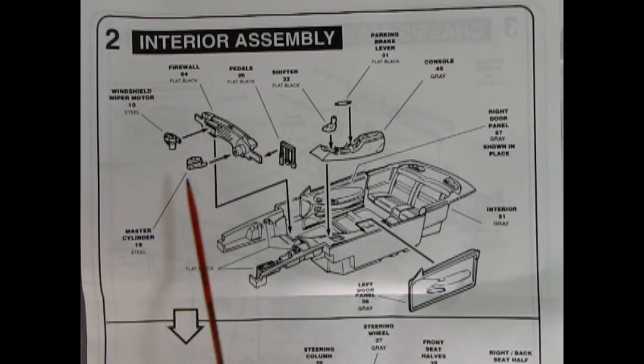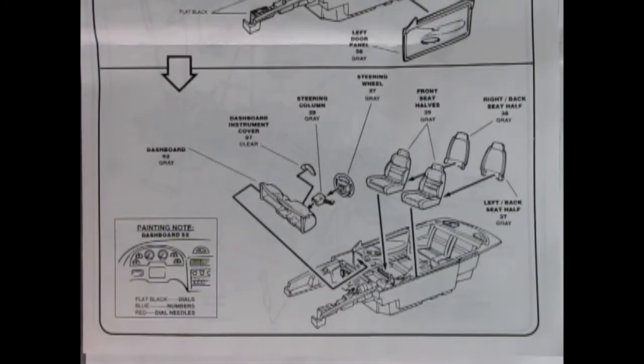Then we're instructed to go down here and see the rest. And here we are with a note on how to paint the dashboard, putting all your dials and details and the piece is separate and pops into the dashboard. There we've got our steering column and our steering wheel and our front bucket seats with the backs going on.